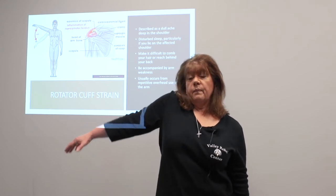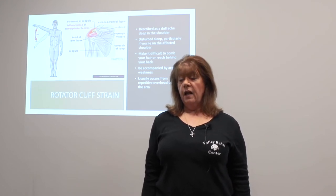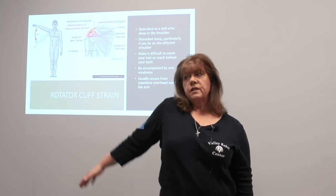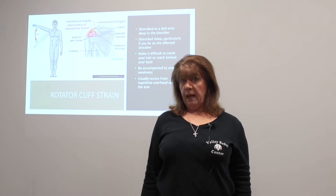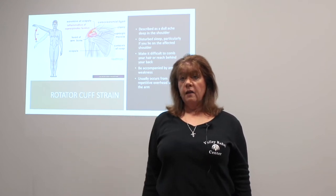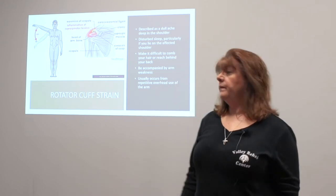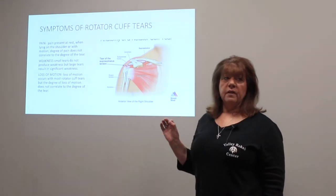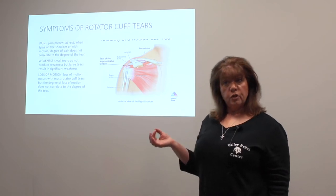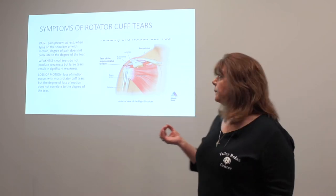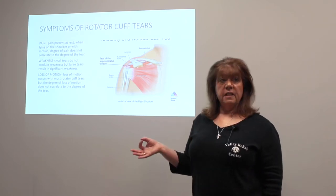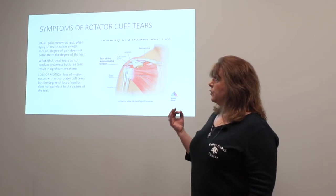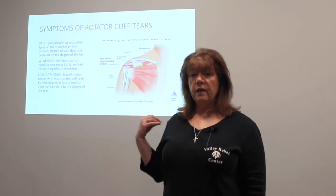With a complete tear of the rotator cuff, you're not going to be able to raise your arm. You'll see the person hike their shoulder up to try and raise it but not be able to get through the full range. With a partial tear, they may be able to bring the arm close and raise it, but they can't raise it out to the side. The degree of pain does not correlate with the degree of the tear — small tears can be rehabilitated, while complete tears need surgery. The degree of loss of motion also doesn't necessarily correlate with the degree of the tear unless it's a complete tear.